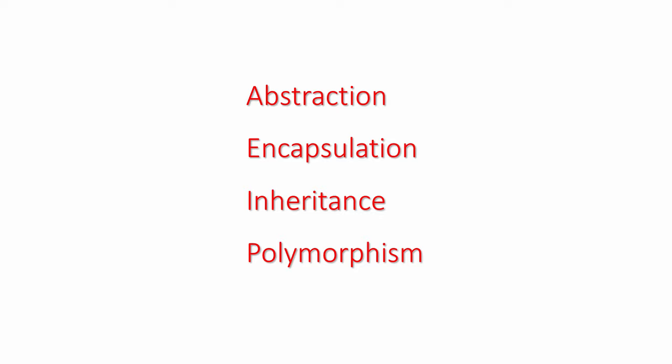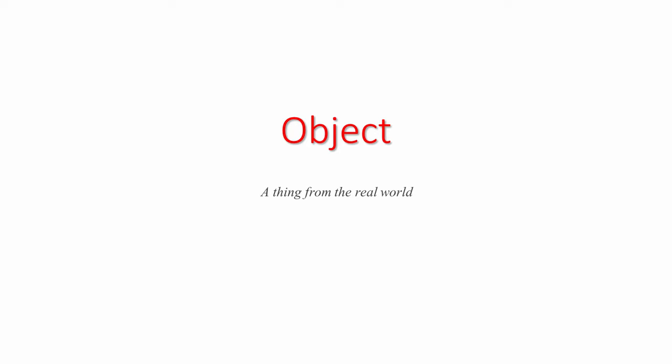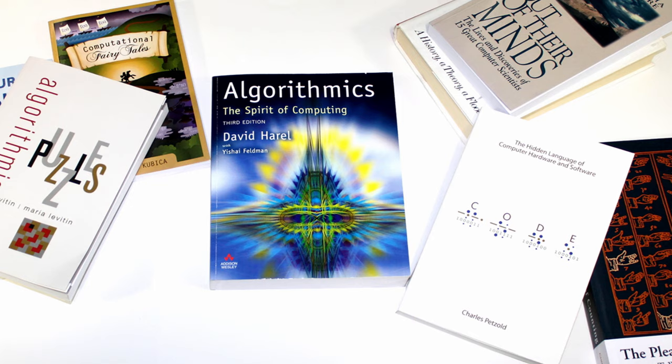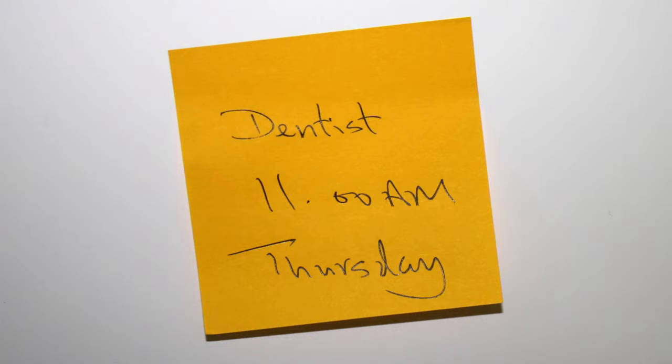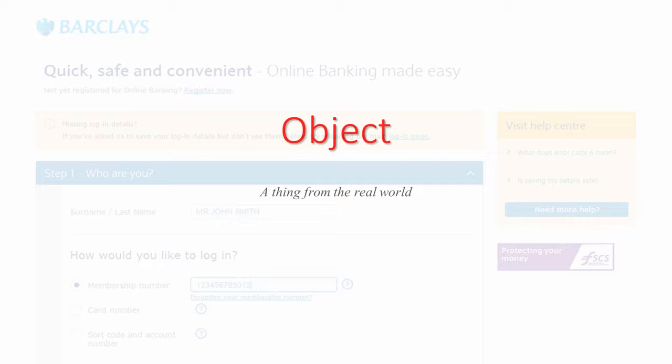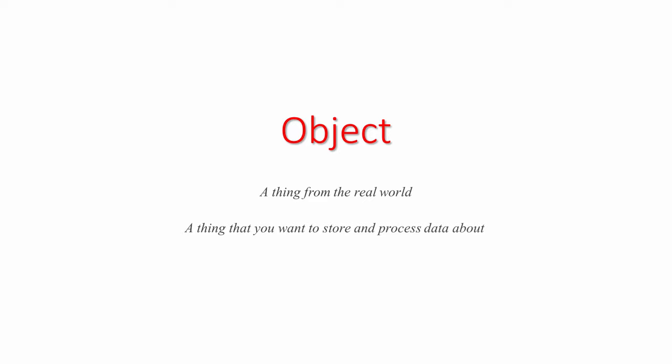Before considering what they mean, first consider what is an object. An object is a thing from the real world. It could be a car, a boat or a book, but it might not be something physical that you can touch. It could be a dental appointment, a seat reservation for the cinema or a bank account. In the realm of object-oriented programming, an object is anything of interest to the software application that you're building. It's anything that you want to store and process data about. Another name for an object is an entity.